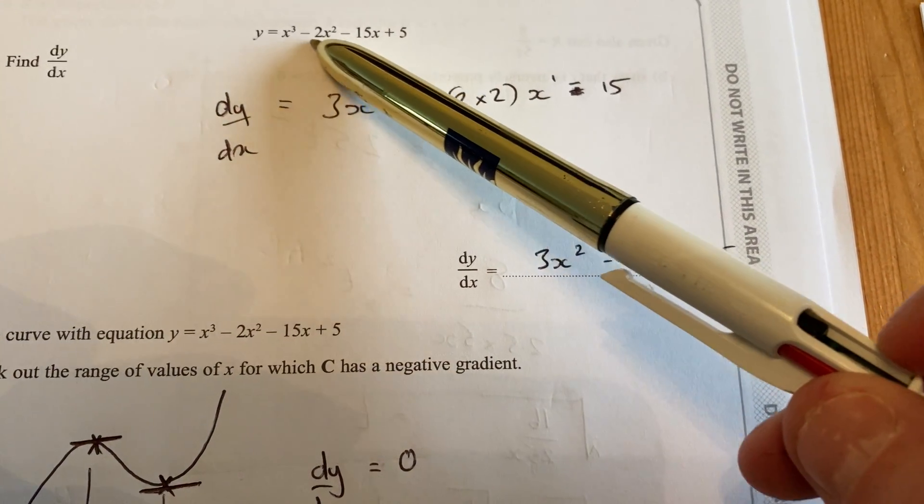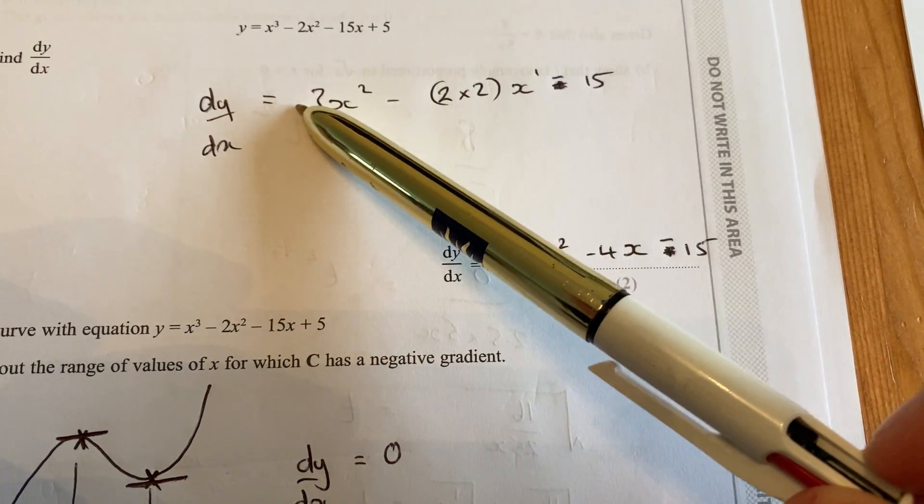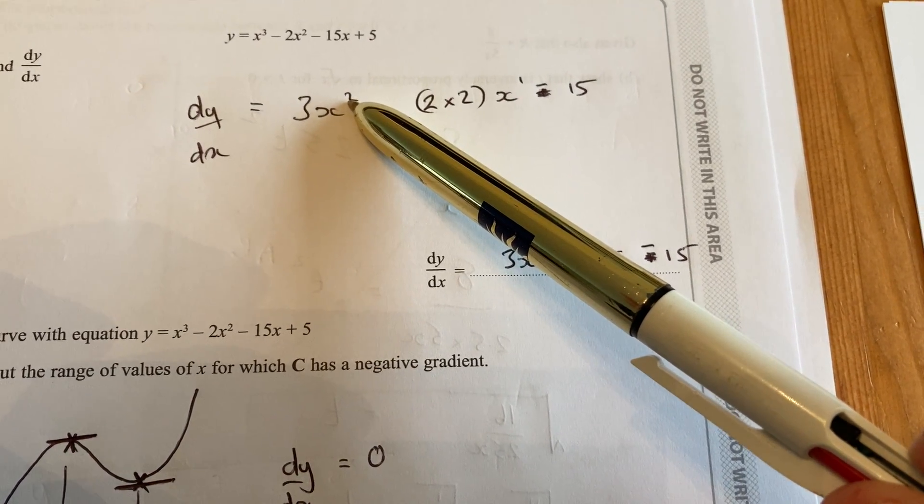Individually, term by term, the power comes down and multiplies. So x cubed, the power of 3 comes down and the number of the power goes down by 1.